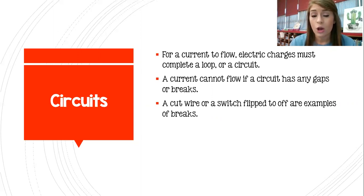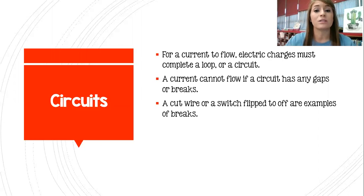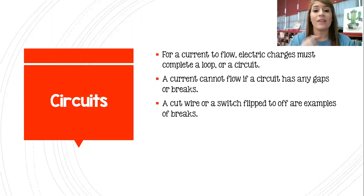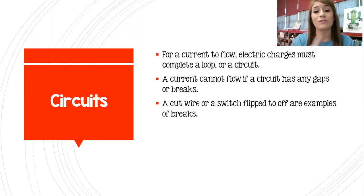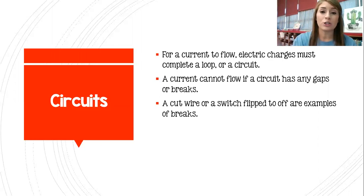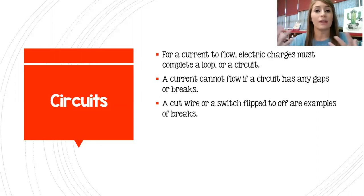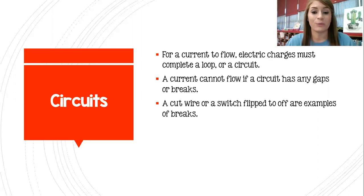A cut wire or a switch that is flipped off — those are examples of breaks. When you turn that switch off, you have put a gap in that circuit, and that's why the lights go off, because that electricity is not able to flow anymore. When that electricity is not able to flow through that open circuit, it's not able to do what it needs to do.